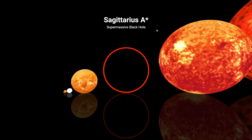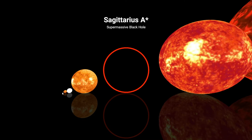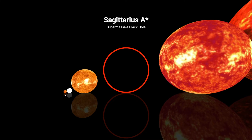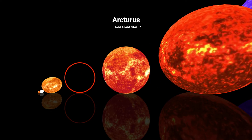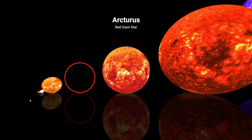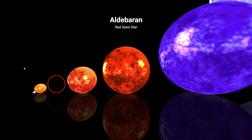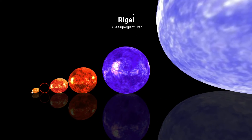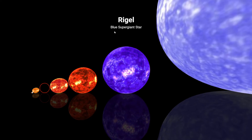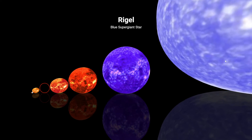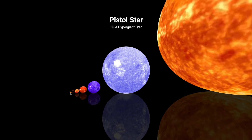Sagittarius A, a supermassive black hole — Earth is just one pixel now. Arcturus, a red giant star. Aldebaran, another red giant star. Then a blue supergiant star. I just can't see Earth anymore.